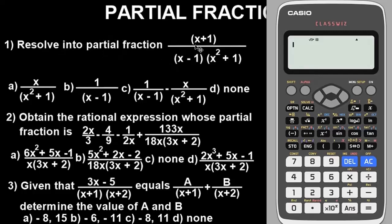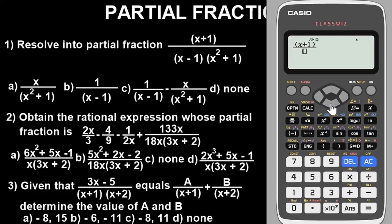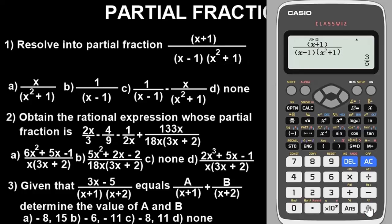Having done this, let's simplify the first partial fraction. We are asked to resolve the given expression into partial fractions. We input the numerator as (alpha X + 1) divided by (alpha X − 1) times (alpha X² + 1). Press equals and it gives us 2 over 5. You can press SD to convert to decimal — 0.4. We now simplify the answer options and whichever gives us 2 over 5 or 0.4 is our answer.